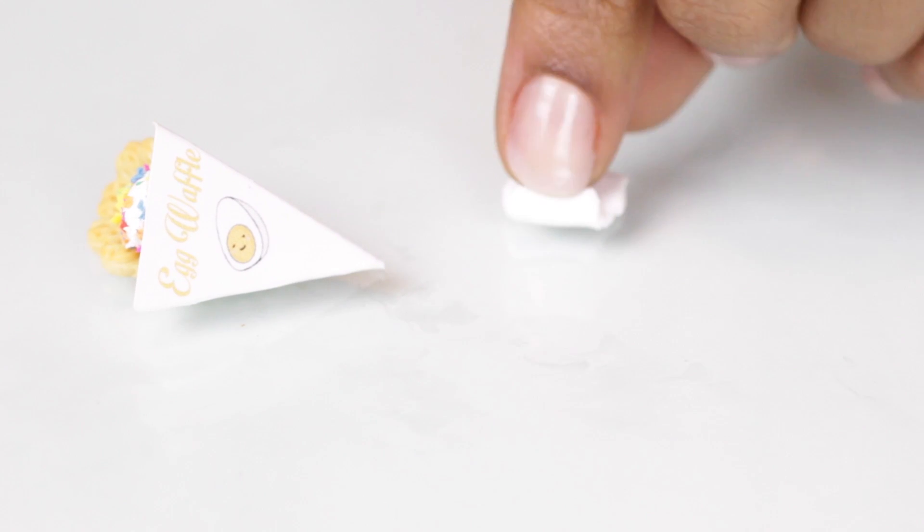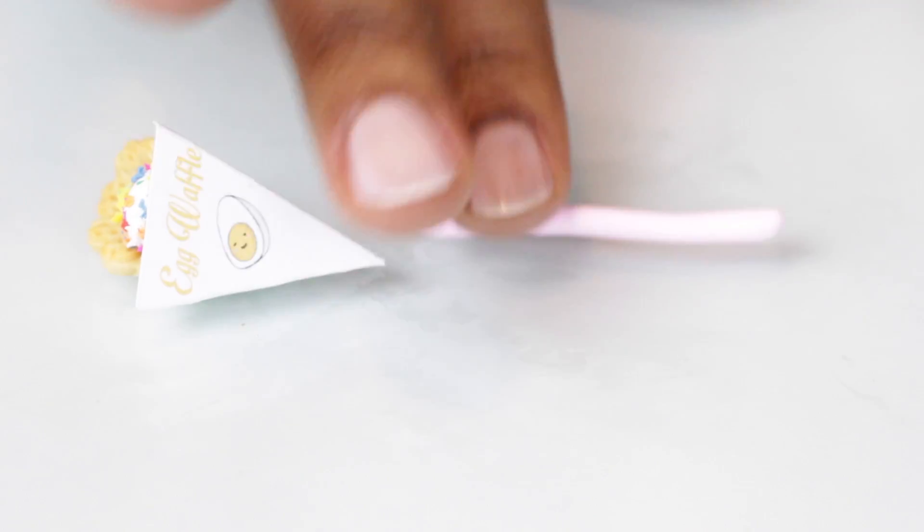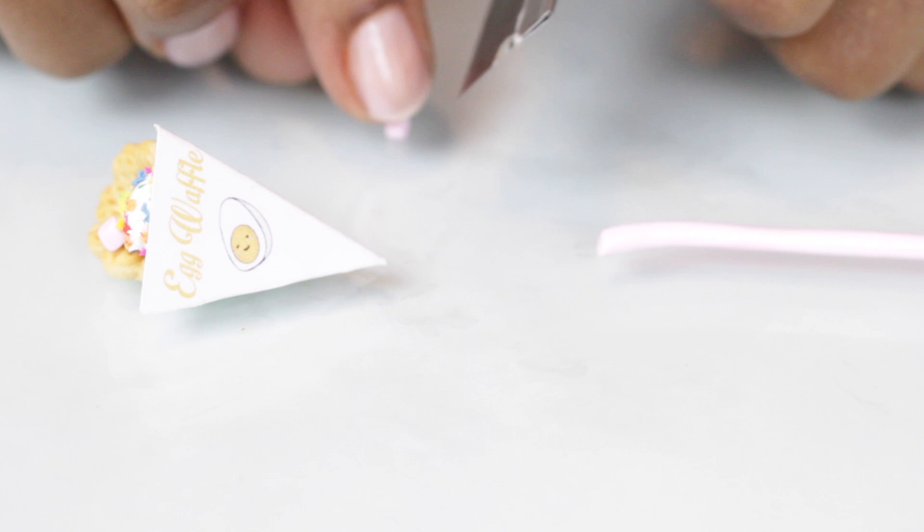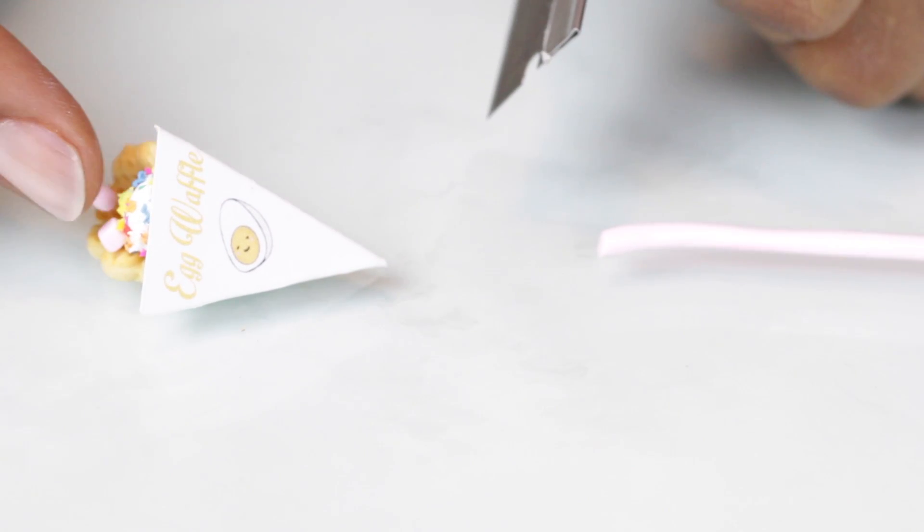I want to make some pastel pink marshmallows so I'm going to mix some white and pink together and then make little tiny marshmallows just like that and add them all to the top as well.